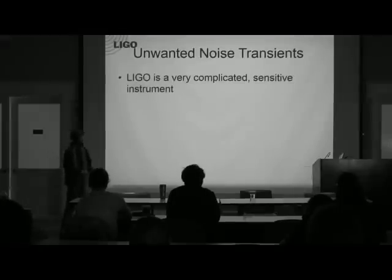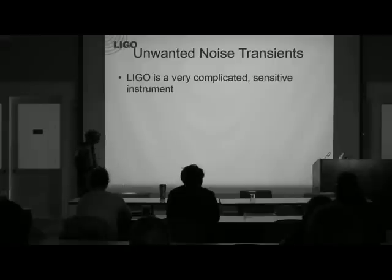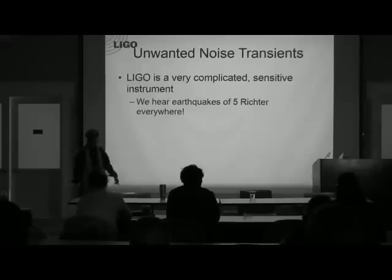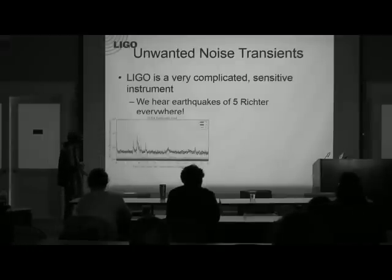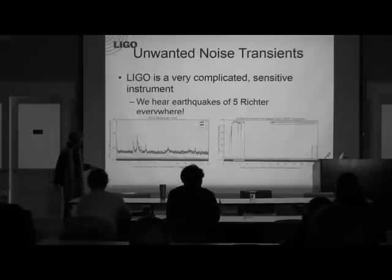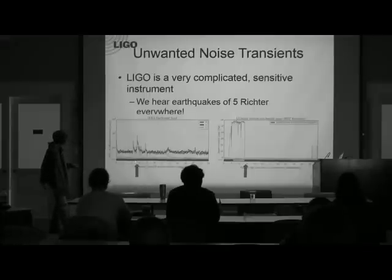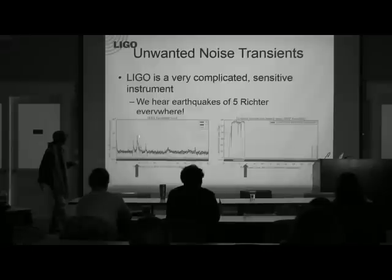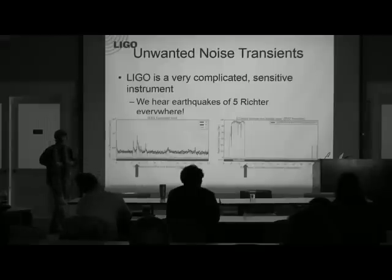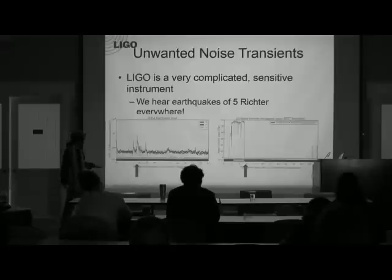On noise transients: LIGO is really, really sensitive because we want to detect gravitational waves at a strain of 10 to the minus 21. We hear pretty much everything — we hear earthquakes of magnitude five or above from around the world. This is what it looks like on our data, and this is what it does to our interferometer: it makes us lose lock. Around the fifth hour of this day, a magnitude five earthquake somewhere in the Atlantic Ocean caused our range to drop suddenly to zero because the interferometer lost lock. We had almost reached 60 megaparsecs range right there — I was there that night, it was really exciting.